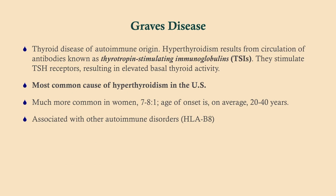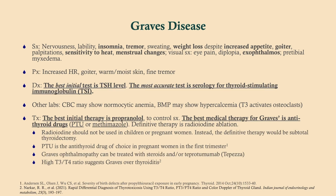Graves' disease is the number one cause of primary hyperthyroidism — it's very common. What happens here is that you have antibodies that are made that stimulate the thyroid. This is not TSH, so if you measure TSH it's going to be low because of the negative feedback. These antibodies are called thyrotropin-stimulating immunoglobulins (TSIs), and you can measure them in lab. This is the most common cause of hyperthyroidism in the U.S. Like most autoimmune disorders, it's more prevalent in women — about seven to eight cases in women to every one case in men — and it tends to be in younger women. It is associated with other autoimmune disorders; here we're talking HLA-D8. Know that for Step 1.